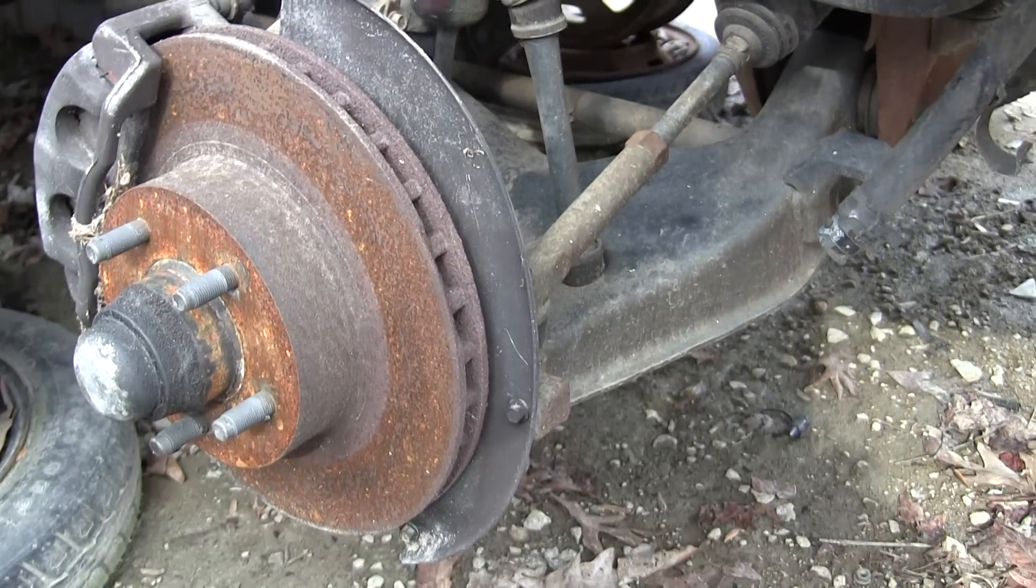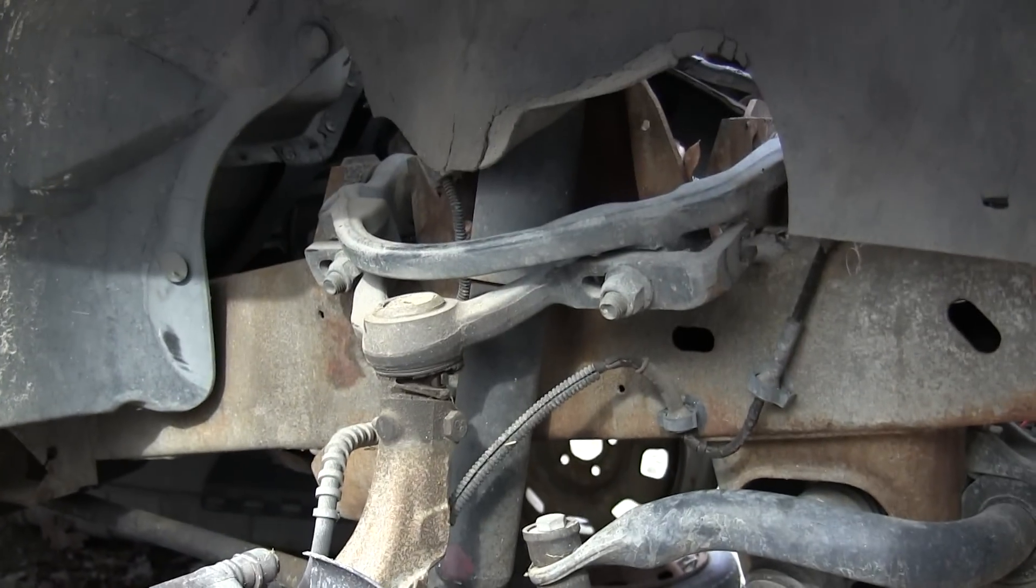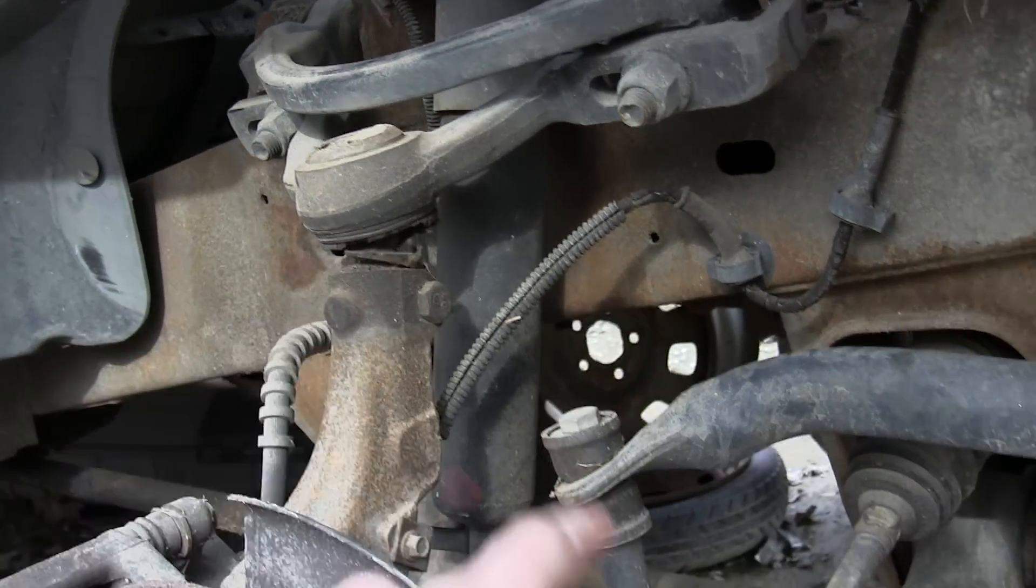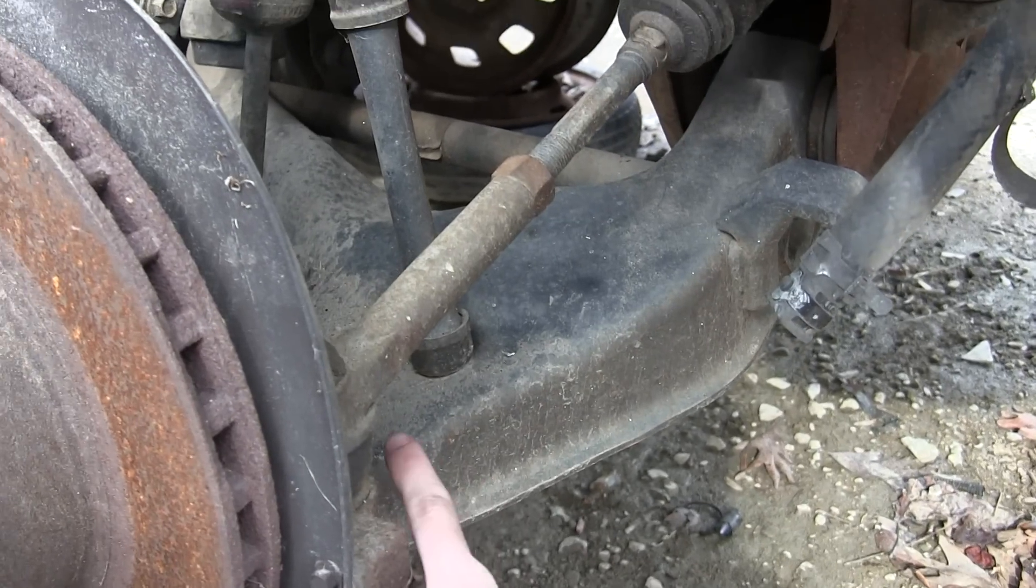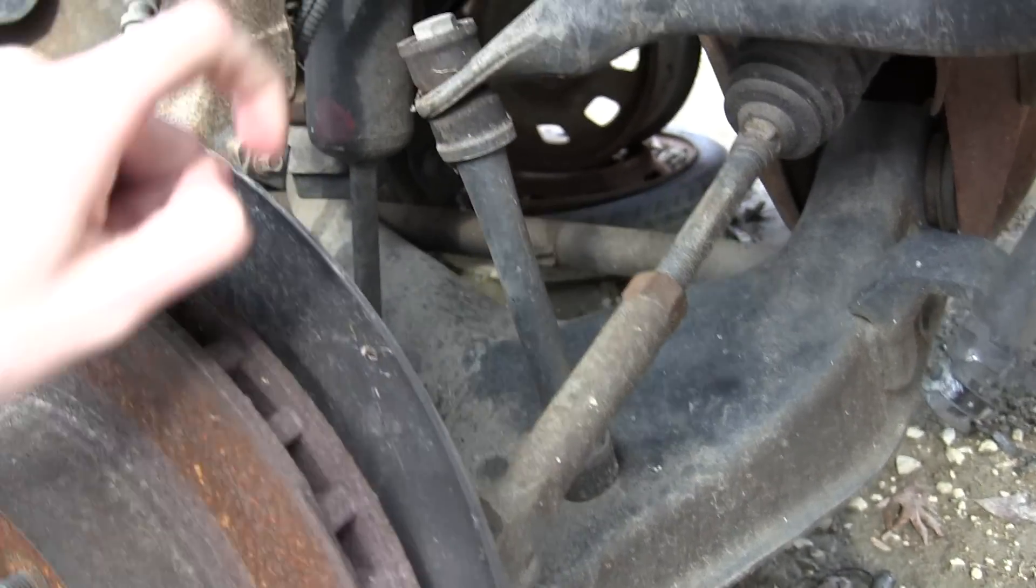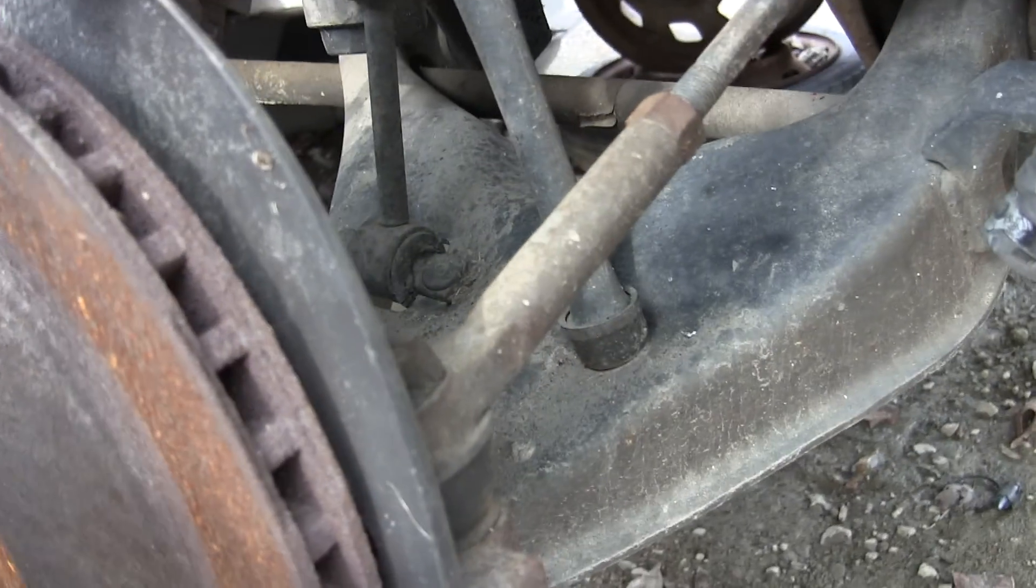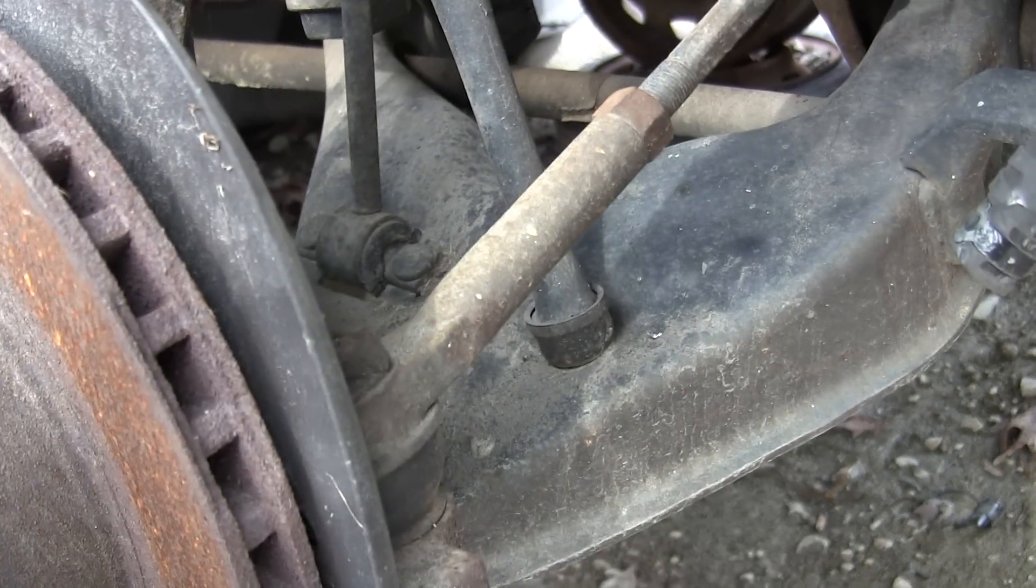So here we have our double wishbone suspension, or double A arm, and you can see the controlling arm here at the top. And it's obviously a little bit smaller than this controlling arm here at the bottom. And then you've got your shock absorber here, connecting with the lower control arm.